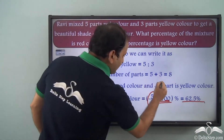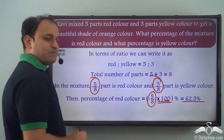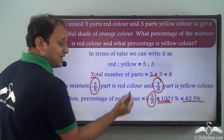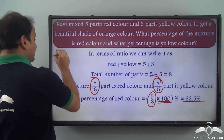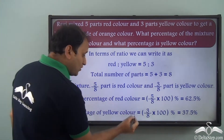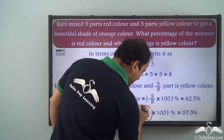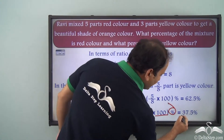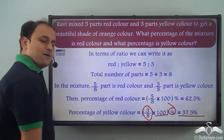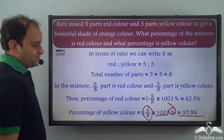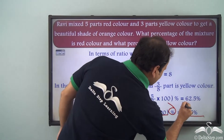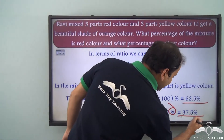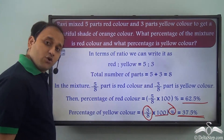Similarly, we have 3 by 8 part yellow color. So it will be 3 by 8 into 100, and a percent symbol here. The percentage of yellow color is equal to 37.5 percent. So in the mixture, 62.5 percent is red color and 37.5 percent is yellow color.